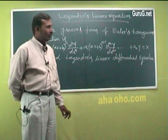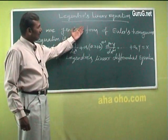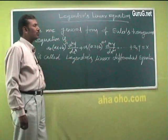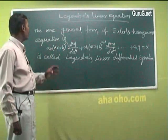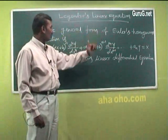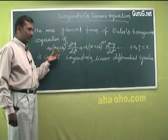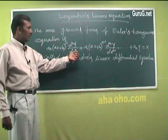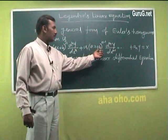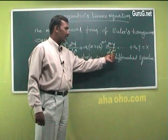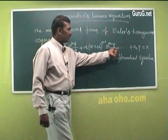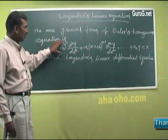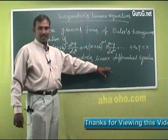We now move on to Legendre's linear equation. Legendre's equation is a more general form of Euler's homogeneous equation. The most general form is: a₀(ax+b)ⁿ(dⁿy/dxⁿ) + a₁(ax+b)ⁿ⁻¹(dⁿ⁻¹y/dxⁿ⁻¹) + ... + aₙy = X. This type of equation is called Legendre's linear differential equation.